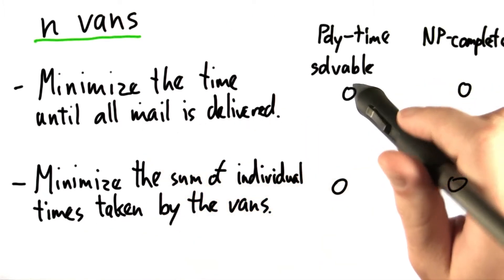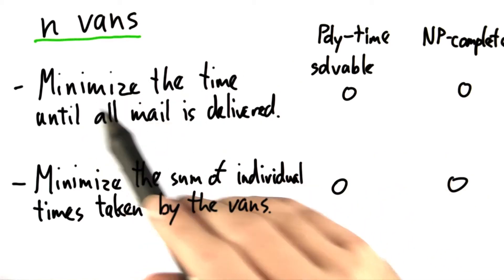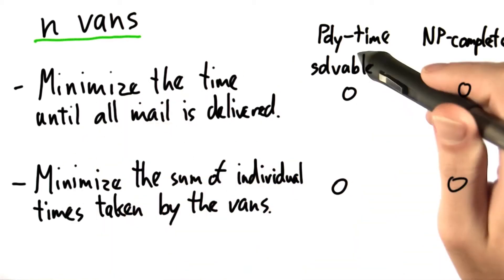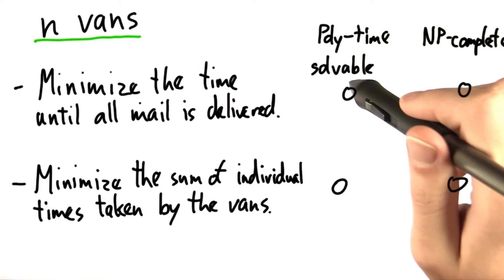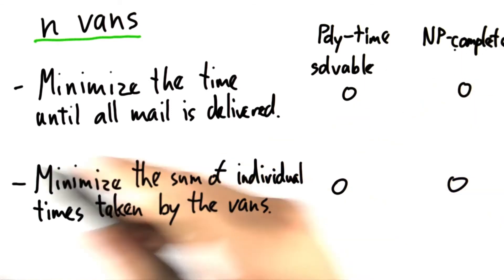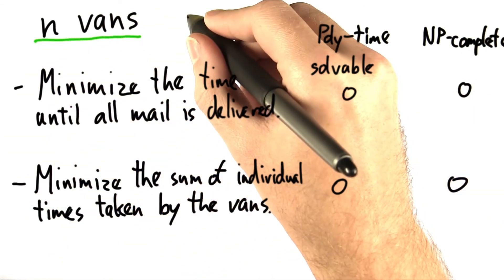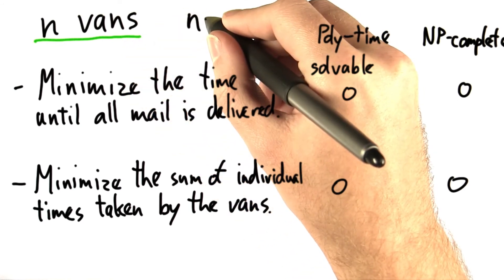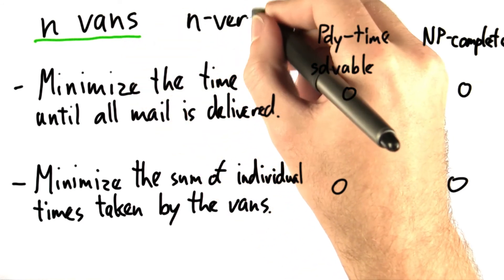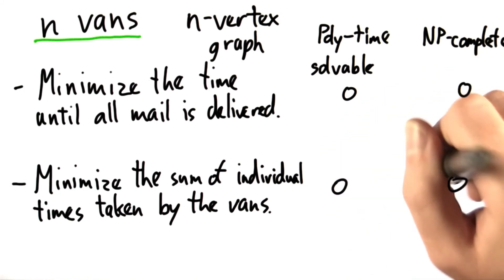Now what I'd like to know is whether minimizing either of these times is polynomial time solvable or NP complete. And let's go ahead and say this is the case for n vans and an n vertex graph. Go ahead and check whichever is appropriate.